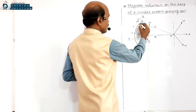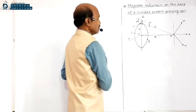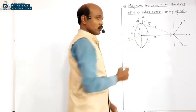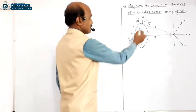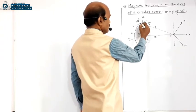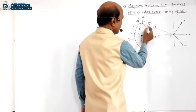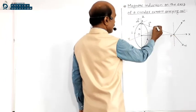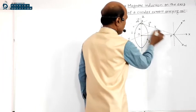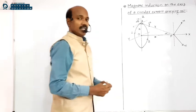The direction of the x-axis is the direction of the vector. Consider a small element at point A on the coil, and join A to P. The line AP makes angle alpha with the x-axis.